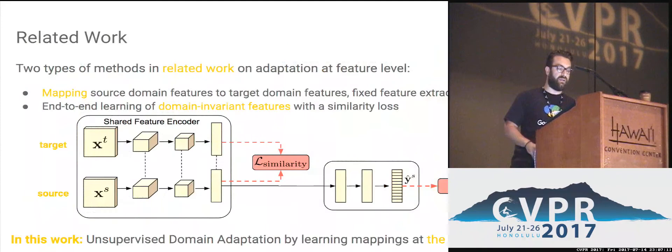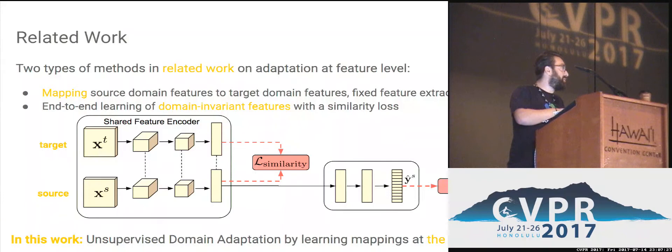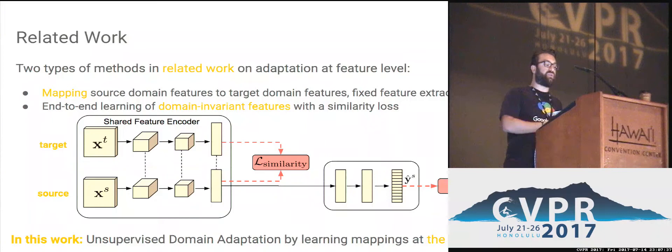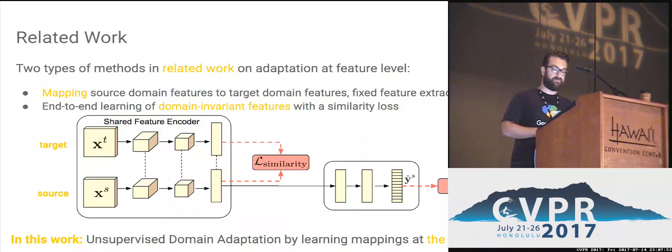A little bit about related work. There are two types of methods in recent related work on unsupervised domain adaptation, and they are both done at the feature level. The first type uses a fixed feature extractor and learns the mapping function from source domain features to target domain features. The second type uses a shared feature encoder between source and target domains, learning domain-invariant features end-to-end with a batch-based similarity loss to bring the feature distributions as close as possible. This feature is further trained with a task loss using the source labels available.